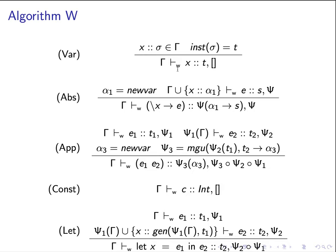The main idea is basically to eliminate the need for the gen rule as well as the ins rule, because these two rules are non-syntax-directed — they can happen anytime and anywhere. This makes it easier to create proofs but difficult to run as an algorithm. So the main idea is to embed the ins rule as a function in the var rule, and to fuse or embed the gen rule as a function in the let rule. Let's go through them in detail.